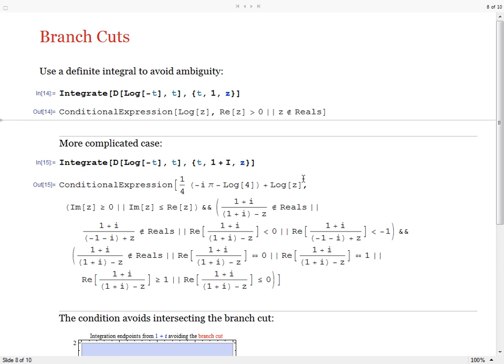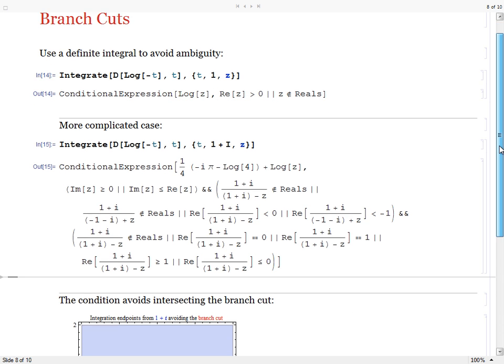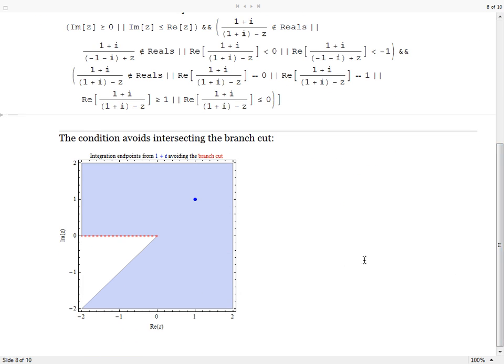If we change the lower bound of integration from t equals 1 to t equals 1 plus i, then the resulting condition on z is quite a bit more complicated. You can see it visualized in this region plot. This plot indicates that straight line integration paths from the point 1 plus i can end at any point in the complex plane as long as the path doesn't intersect this branch cut.